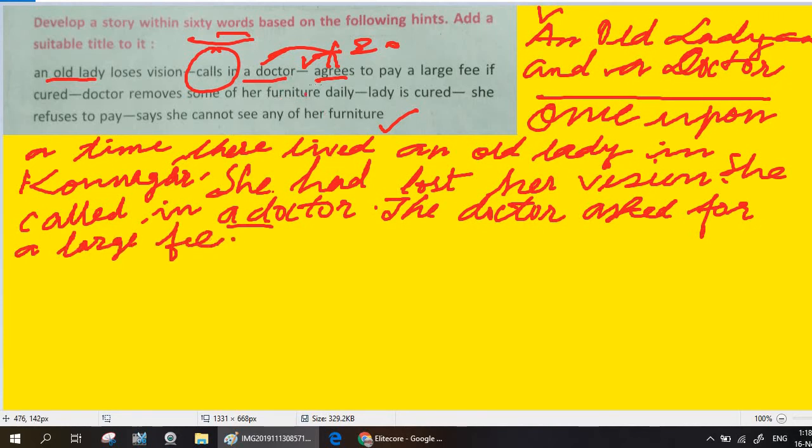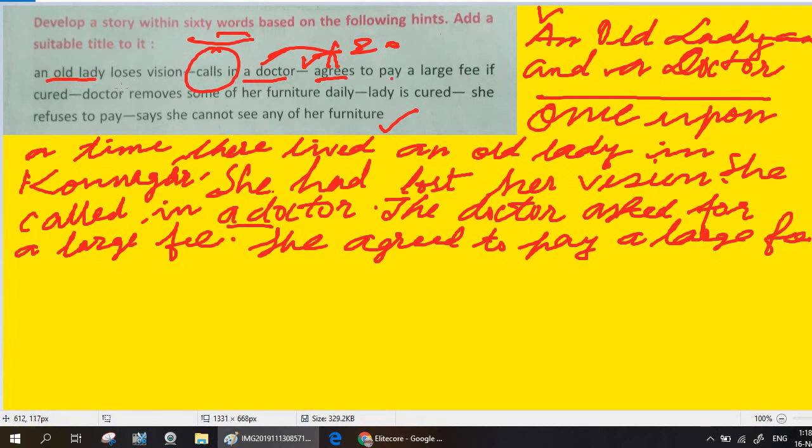Okay, not 'but' here. A large fee. And then you can write it: She agreed. She agreed to pay a large fee. If cured. Now there is a condition: If cured, then she will pay.